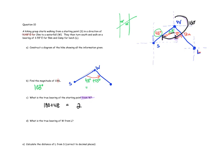What is the true bearing of the starting point from W? From the word 'from', you start at W's north line. Going straight down to the south is 180 degrees, then you add the extra 48 degrees from the alternate angle. So the true bearing is 180 plus 48, which equals 228 degrees true.